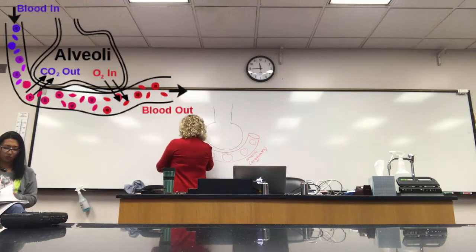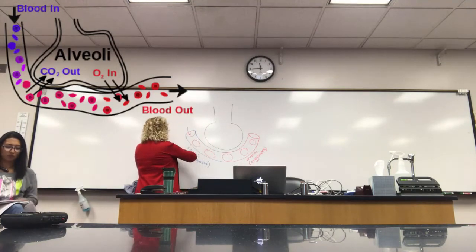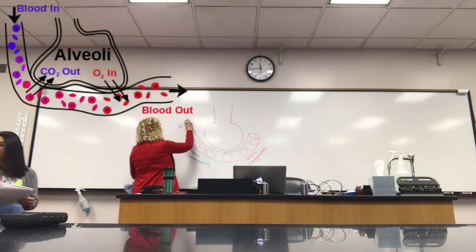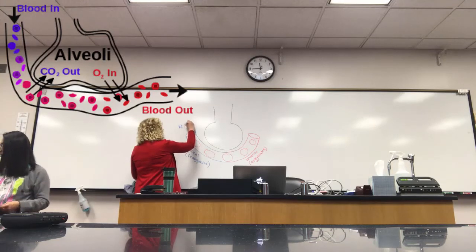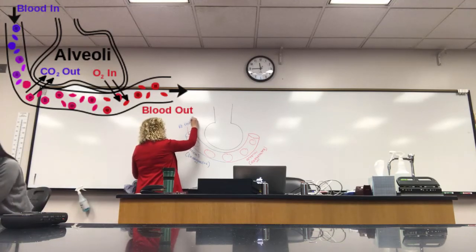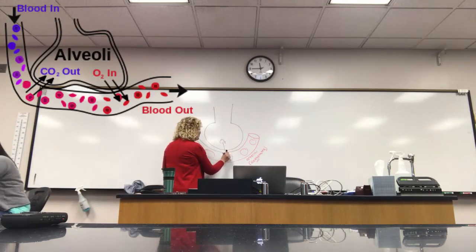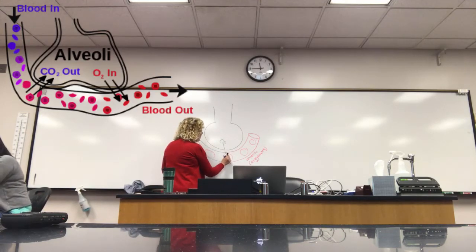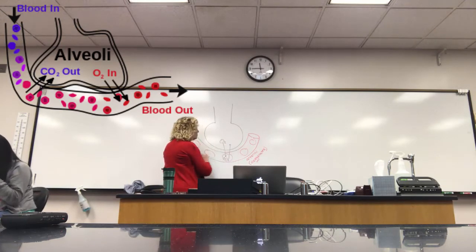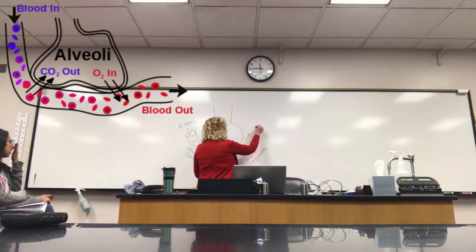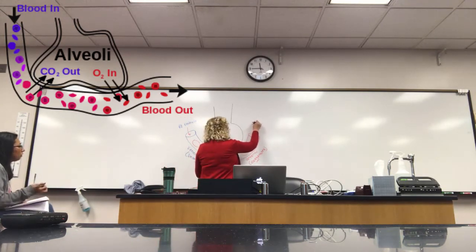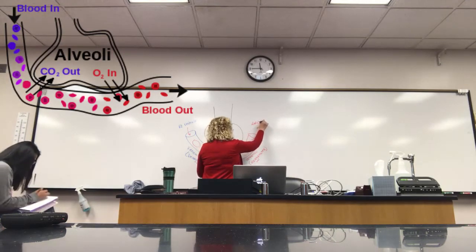And then this would be the arterial side, because now the blood is actually oxygenated. So this blood that's coming through here, this is coming from the right side of the heart. And then once it picks up its supply of oxygen, and then dumps off its carbon dioxide load, this blood is then going to the left atrium.